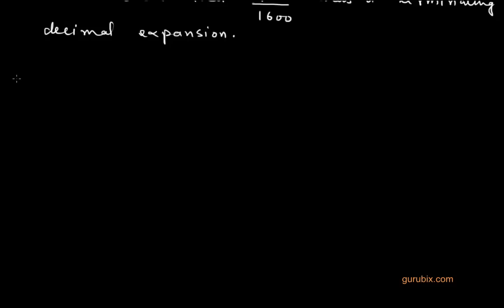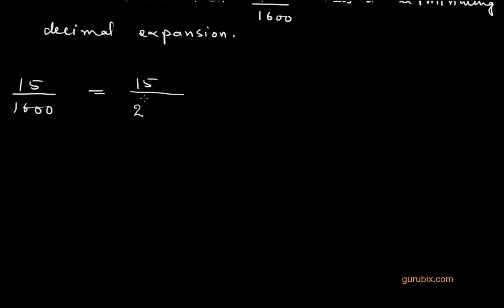Now we shall move to the second part of the question, which says to find the decimal expansion of the terminating decimal. We shall convert 15 over 1600 into its decimal expansion. We have already factorized 1600 into the form of 2 to the power 6 multiplied by 5 to the power 2.